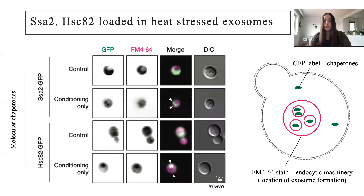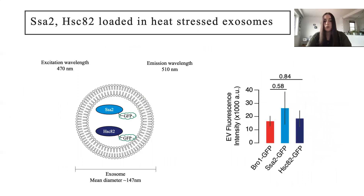Now we wanted to verify that our critical molecular chaperones were being loaded into the protective exosomes. So I started by imaging live cells expressing fluorescent heat shock proteins SSA2 and HSC82, which had also been stained with FM464, which labels the endocytic machinery — just where exosomes are made within the cell. I found that when I conditioned cells at 42 degrees, chaperones aggregated and colocalized with the endocytic machinery, which suggests that conditioning localizes chaperones within exosomes. I further validated this in two ways: the first was by measuring the fluorescence of exosomes to show that GFP-conjugated heat shock proteins were inside. I excited the vesicles at a wavelength of 470 nanometers, which caused the fluorescent GFP tag to emit 510 nanometer light, which can be detected as seen in the graph on the right.